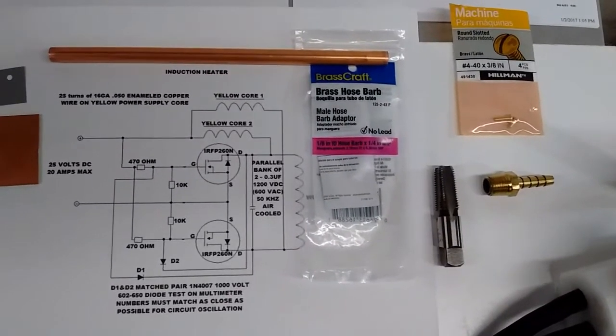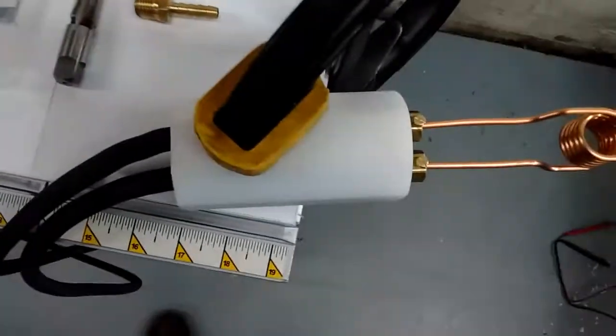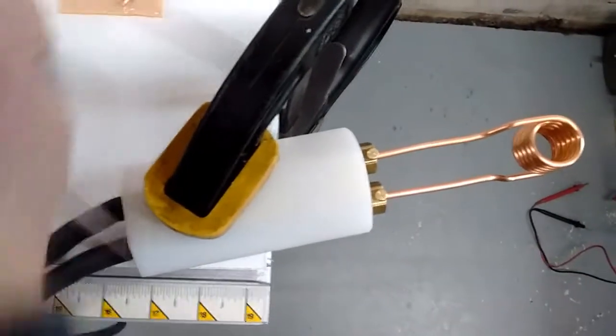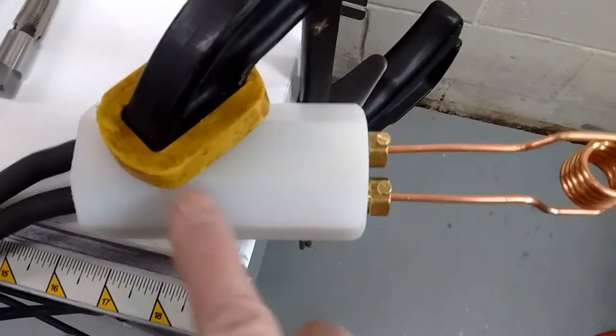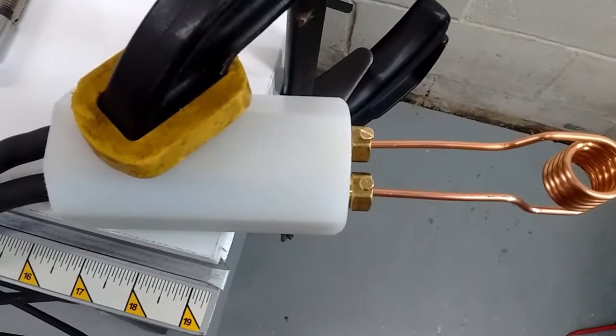Part three of this induction heater - we're going to talk about building the coil holder head. This is a piece of solid nylon block, available on eBay. You can get an inch and a half diameter by 12 inch piece; it's not that expensive.